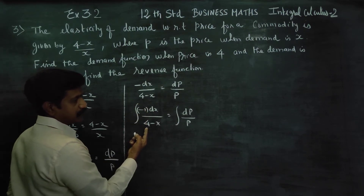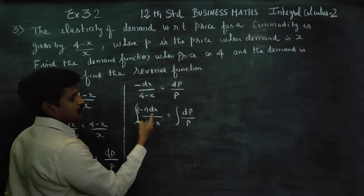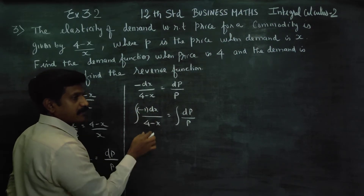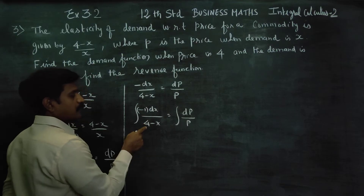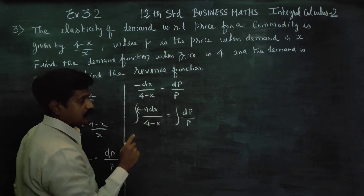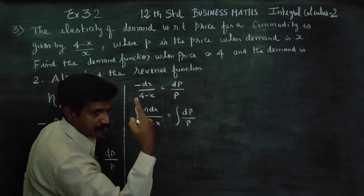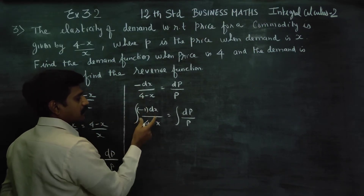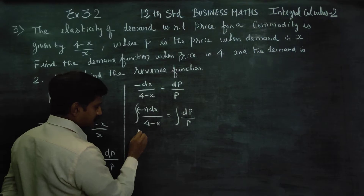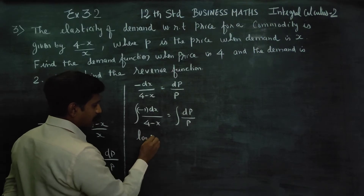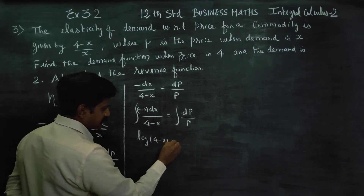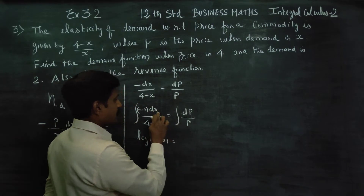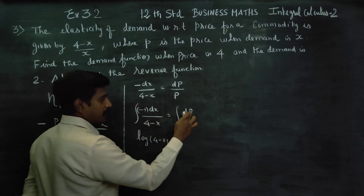The constant 4 differentiates to 0, and minus x differentiates to minus 1. When the denominator is differentiated, the numerator gives us a logarithm. So the logarithm of (4 minus x) is obtained. If x equals p, and dx equals dp, then p equals p.